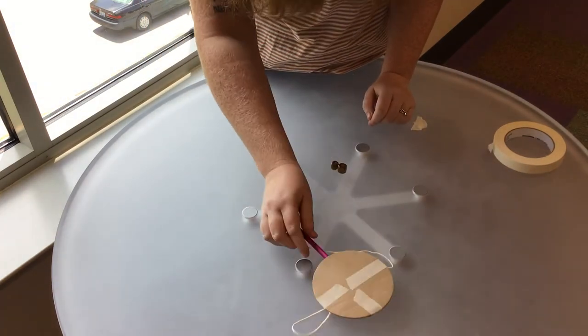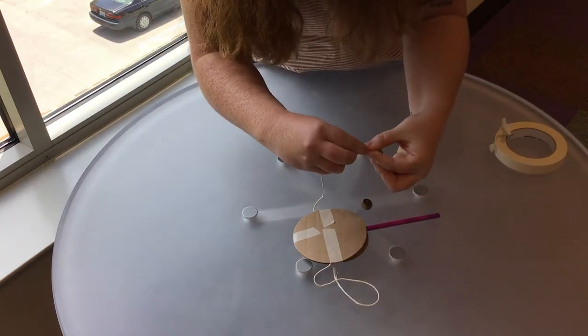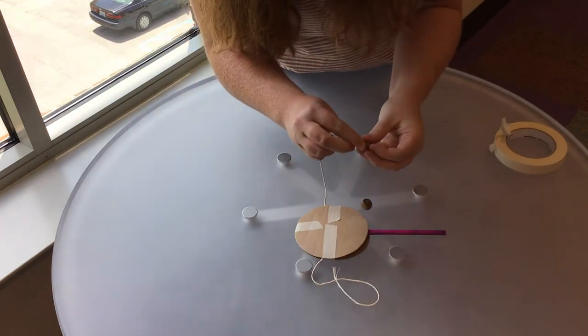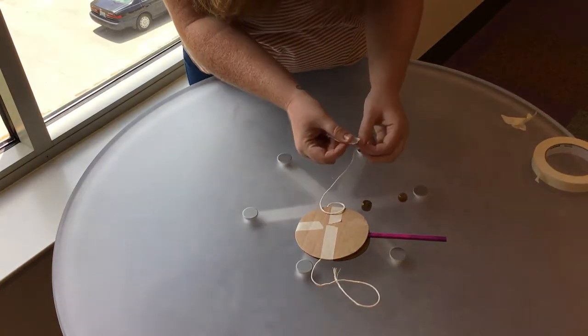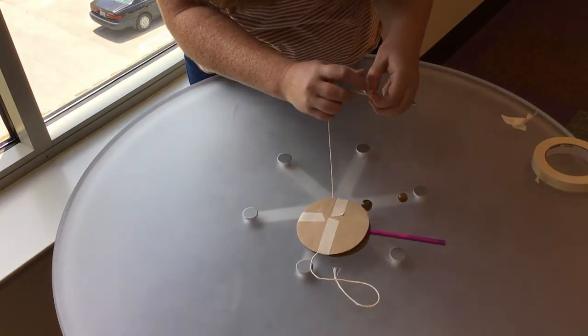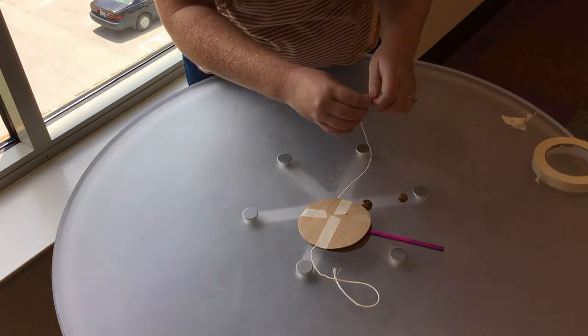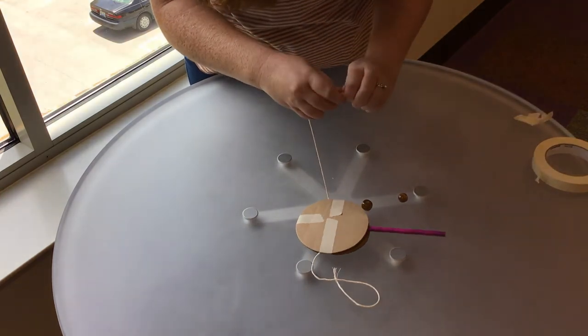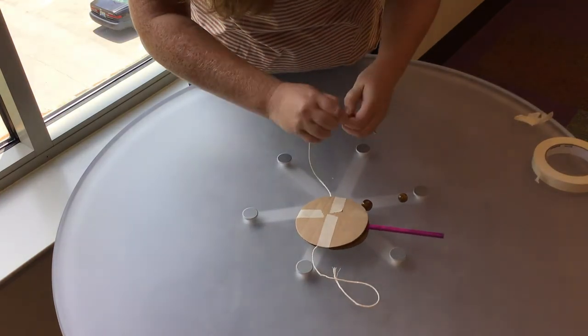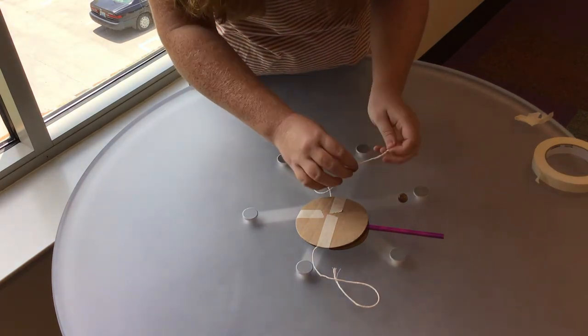Now we're going to put our beads on. We're going to thread our string through the beads. To make it easier, I'm going to tape the end of my string so I can thread the string more easily. Oh yes, that works so much better.